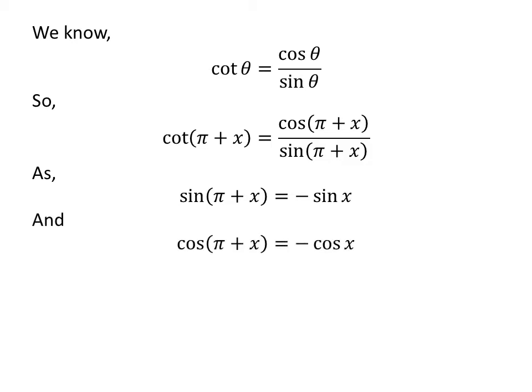We also know the trigonometry identity cosine of pi plus x is equal to minus cosine of x. The proof of this trigonometry identity has been explained in the video appearing in the upper right corner. The link of the video has also been mentioned in the description section.